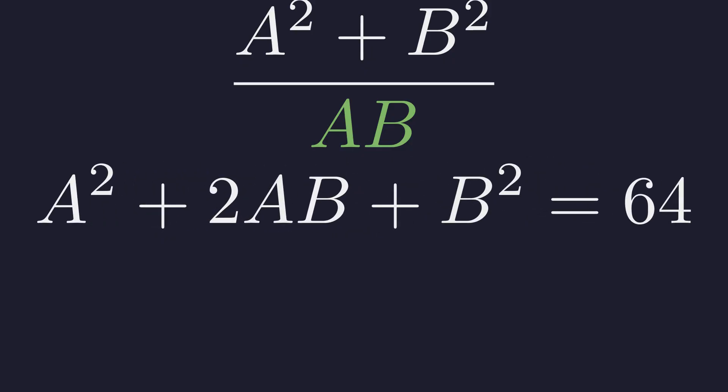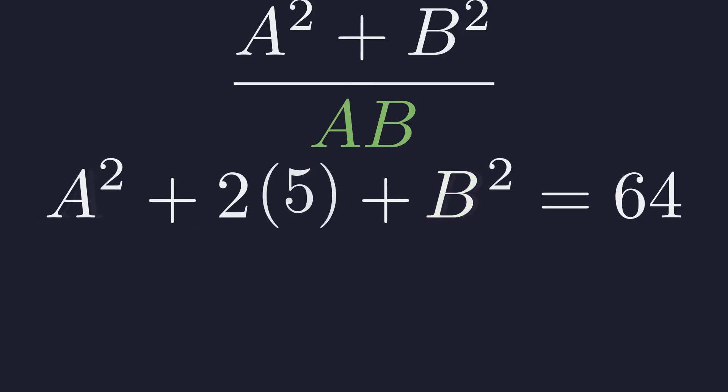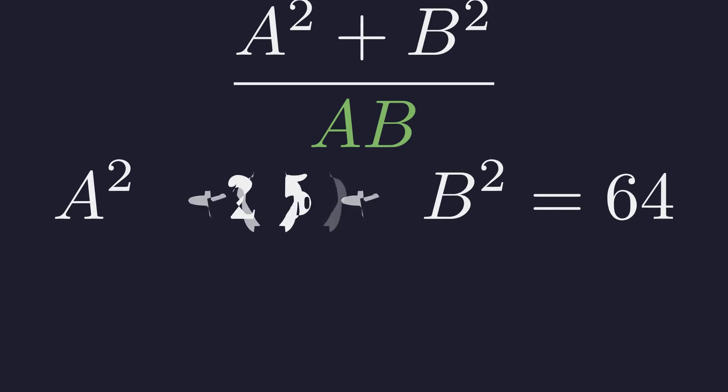Expanding the left side. A squared plus 2 AB plus B squared. We know AB is 5. So we can substitute that in. Giving us A squared plus 2 times 5 plus B squared equals 64. That's 10.